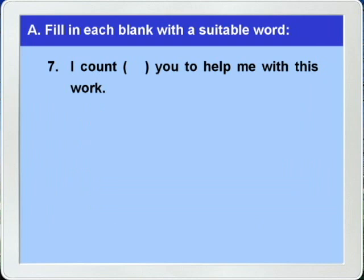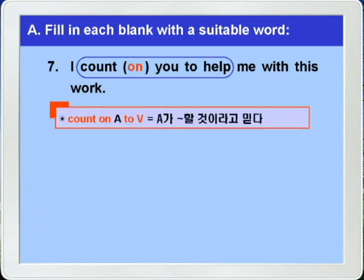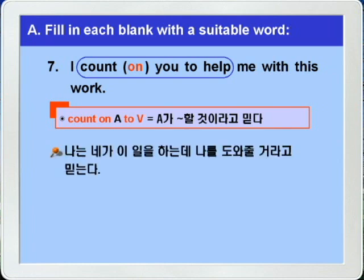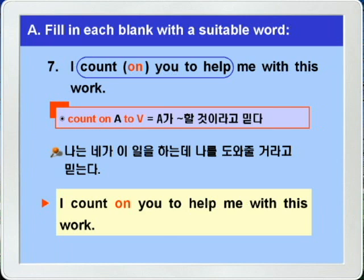7번. 'I count on you to help me with this work.' Count on A to 부정사 하면, A가 뭐뭐 할 것이라고 믿다라는 뜻으로, 하나의 표현으로 알아두시기 바랍니다. 나는 네가 이 일을 하는데 나를 도와줄 거라고 믿는다. 정답은 on이 들어가야 합니다.